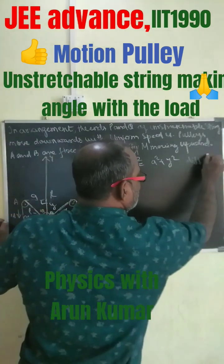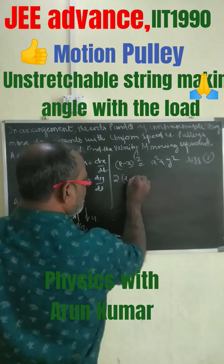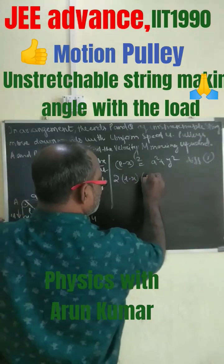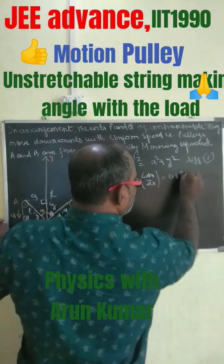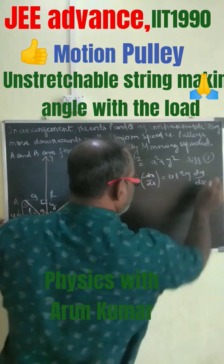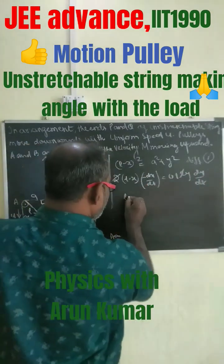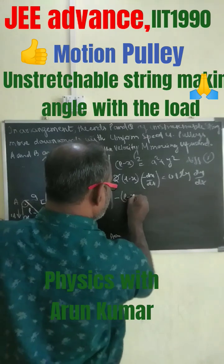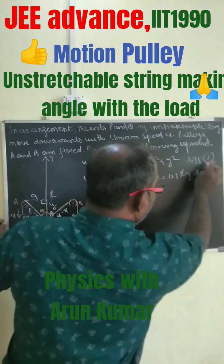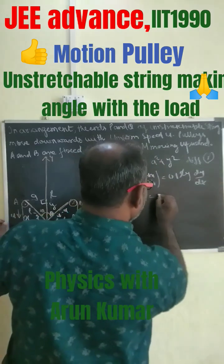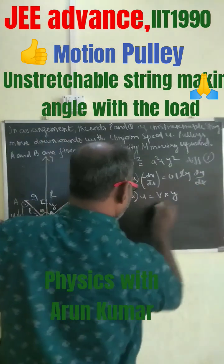Differentiating with respect to t, we get 2 into (L minus x) into minus dx by dt equals 0 plus 2y dy by dt. The 2 cancels on both sides, so we get minus (L minus x) times u equals v times y.